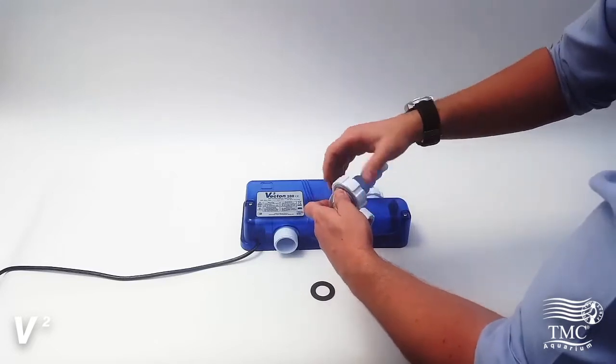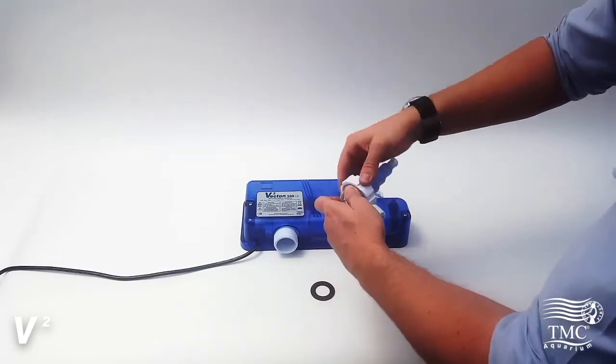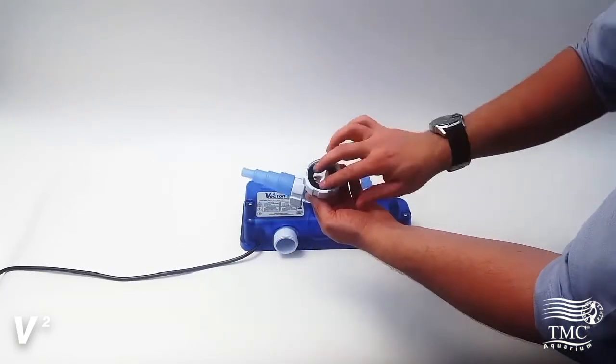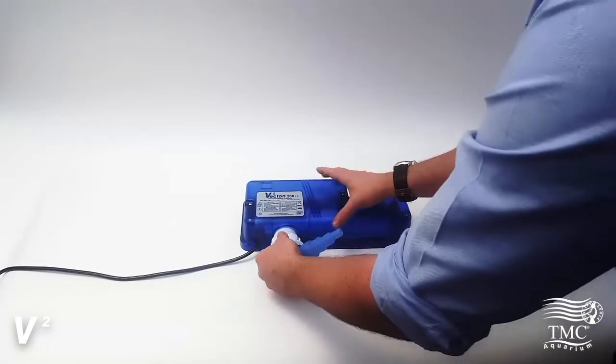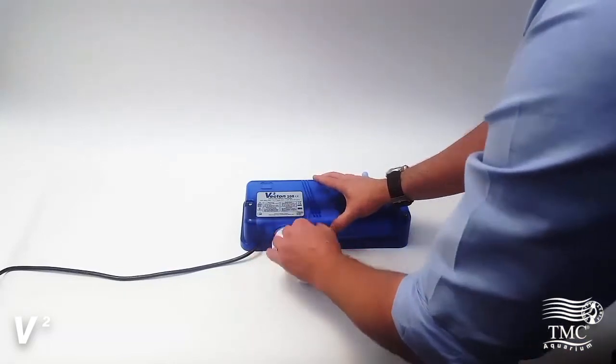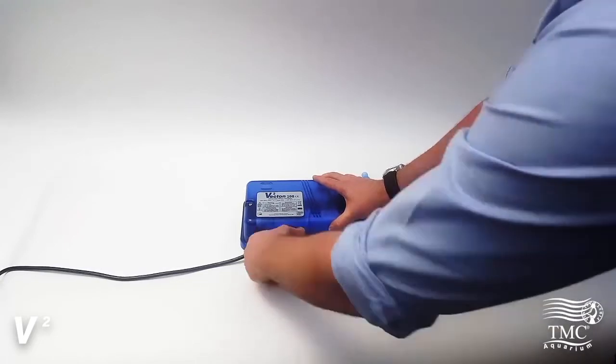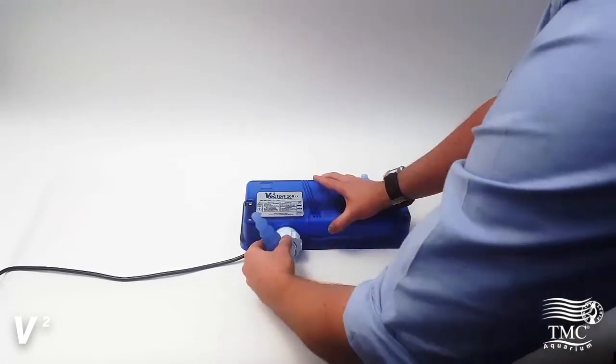You simply assemble as you did before, but you put the hose tail on the clear elbow and then the elbow onto the body including the gasket. This could also be placed on the top of the UV if you needed it to. Spares are available should you want to use two.